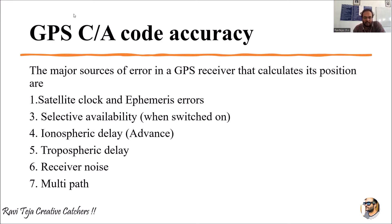The second major source of error is selective availability, which is only applicable when that particular option is switched on. Then there are atmospheric delays: ionospheric delay and tropospheric delay, which are caused by the layers of the atmosphere. We also have receiver noise, and finally multipath errors, where signals arrive via several paths to the GPS receiver. All these are sources of error in a GPS receiver when calculating a position.